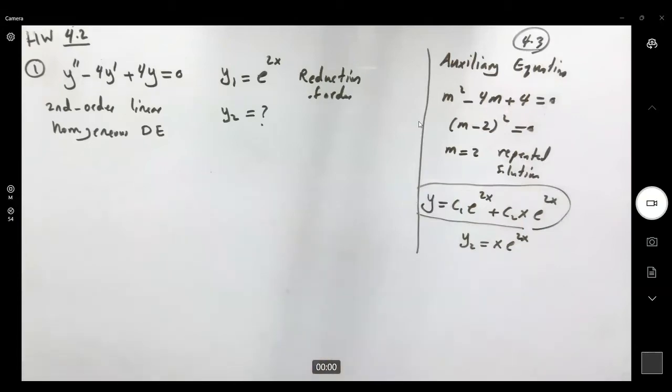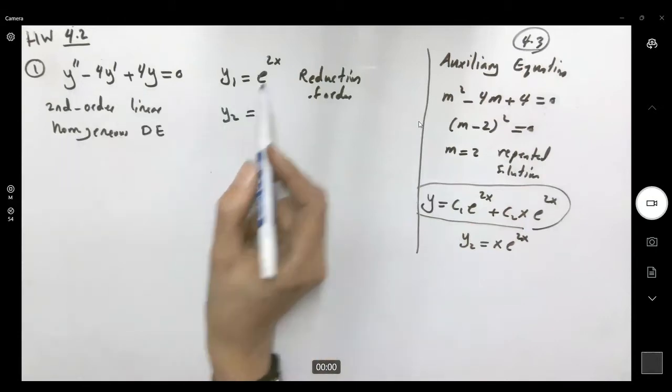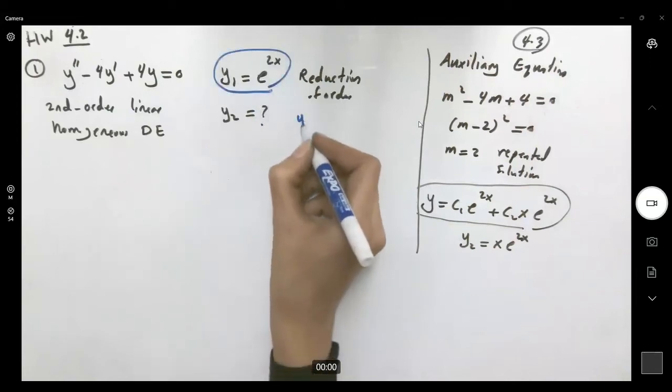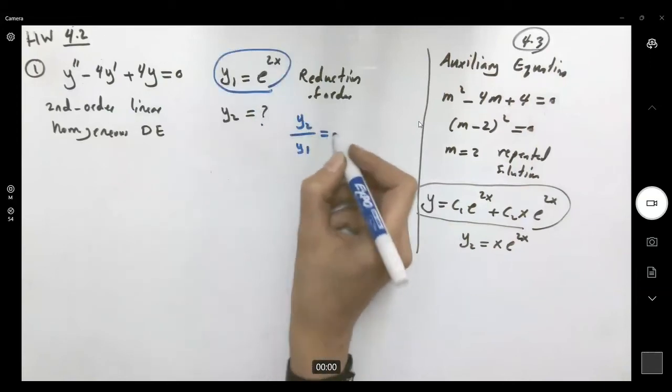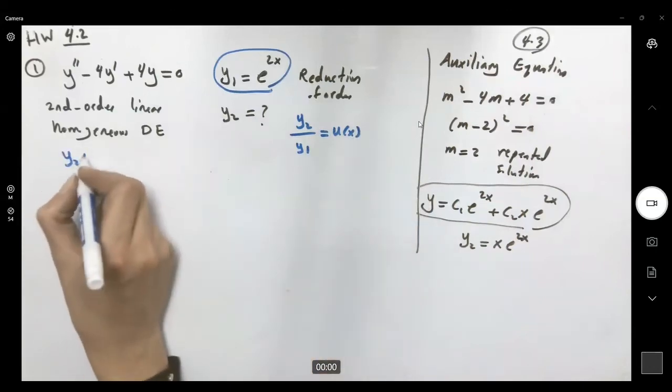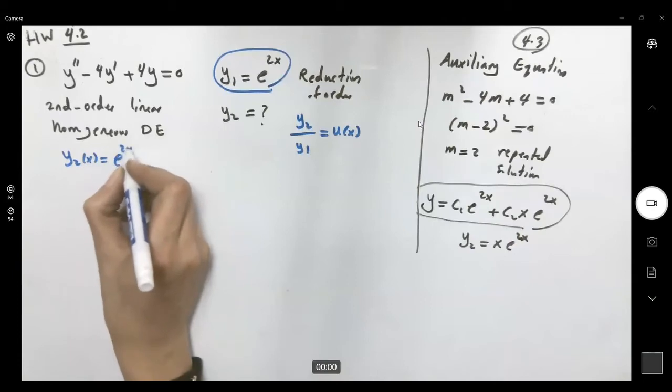First of all, remember that when you're dealing with these types of questions, y2 divided by y1 is a function. This is not a constant. So y2 can be written as e to 2x times u of x.